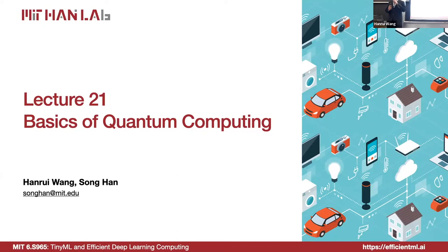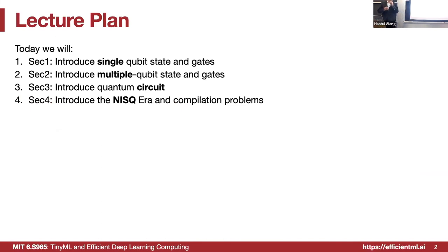Today we are going to first introduce some basics of quantum computing, because before knowing some basic mathematics you cannot fully understand what quantum machine learning is trying to do. In today's lecture we will have four parts: first we introduce the single qubit state and single qubit gates, then we extend to multiple qubits, then we introduce more qubits and gates which compose a quantum circuit, and finally we introduce the current noisy intermediate-scale quantum era and the compilation problem for current devices.